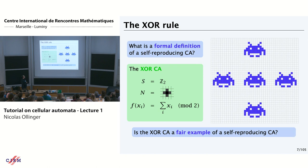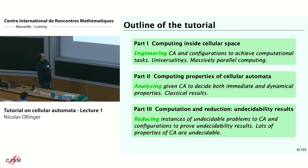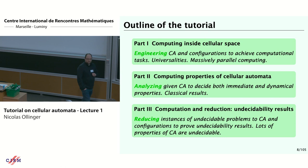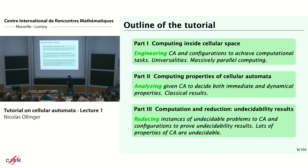That's exactly the kind of problem we will have when we talk about universality. The outline of my talk is in three parts, every part discussing computation from a different point of view. First, how do you compute inside cellular space — universal constructions with the Game of Life or Rule 110? Second, we will study properties of cellular automata seen as dynamical systems, like injectivity, bijectivity, reversibility. Third, we'll see how part one combined with part two provides undecidability results on these subjects.